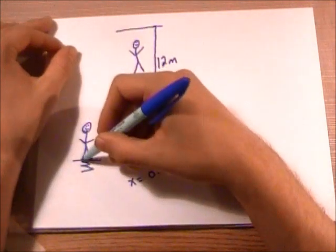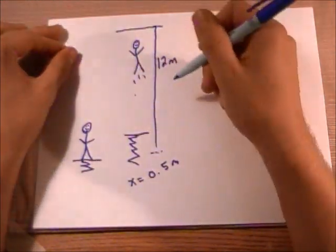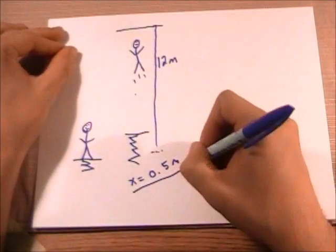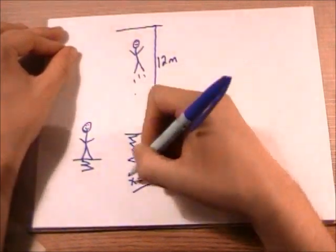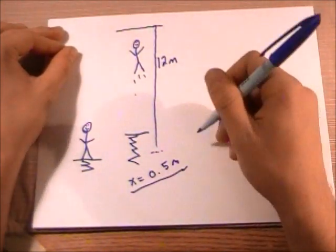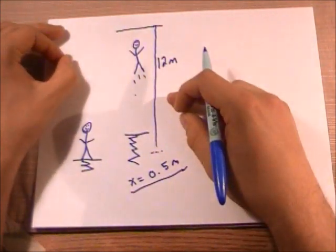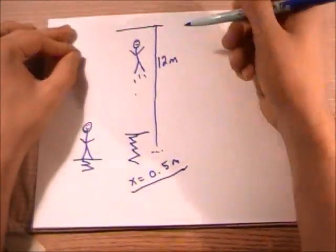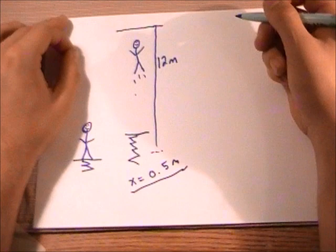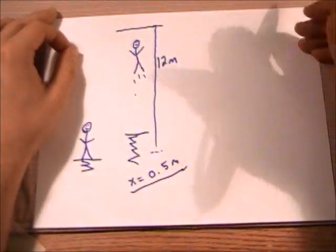So you've got a spring and you have this spring compressed 0.5 meters, half a meter compressed from its equilibrium, and you want to buy a spring that will launch you 12 meters into the air. So you're going to do some physics to figure out what kind of spring you're going to buy.